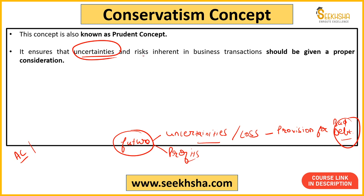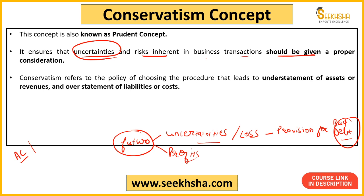It ensures that uncertainties and risks that are there in the business transaction should be given proper consideration — ki kal ko paisa dub sakta hai jinko udhaar diya hua hai, to isko proper consideration deni hai accounts ke andar. So it is a policy of choosing the procedure that leads to understatement of assets — assets ko to aap understate kar rahe ho, lekin liabilities ko aap overstate kar rahe ho. Ek aur example dekho: aapne ek zameen khari di, ek lakh rupay ki jab aapne khari di.